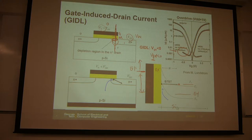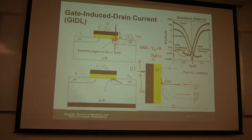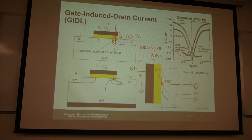This is the conduction band and the valence band of the silicon. If the band is very bent, the valence band edge EV may be even higher than the conduction band edge EC on the other side.